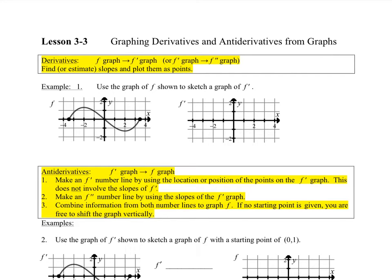Hi, this is lesson 3.3, graphing derivatives and antiderivatives from graphs. What we're going to be doing is giving you derivatives—or I'm sorry, give you a graph, and then you're going to graph the derivative f prime, or you might go from f prime to f double prime. So you're going to estimate the slopes and plot them as well. What I like to do is find the zeros, and so let's go right to an example.